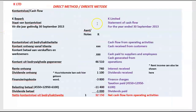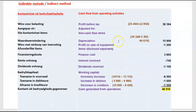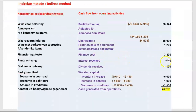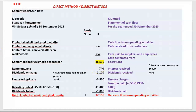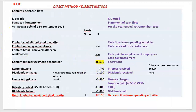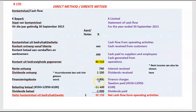Now, if we had applied the direct method, we would not have enough information to calculate those two line items, and in the question they say you can ignore that, so you would start with 46,510. Now we're going to show our separately disclosable items: interest received 740 Rand, dividends received 1,100 Rand, and finance costs paid 3,800 Rand — a cash outflow, so minus 3,800.